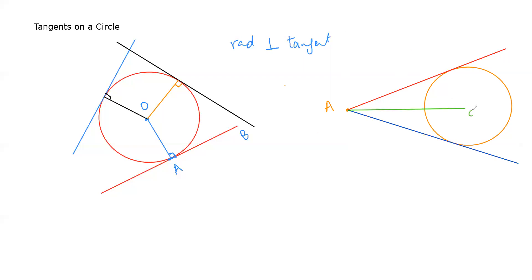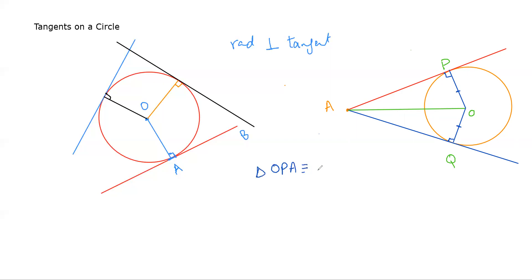Let's call the center O, the two points of tangency P and Q. I draw line OP — it looks perpendicular to AP. The same for OQ. Now, can triangle OPA be congruent to triangle OQA? We have OP equal to OQ since both are radii, OA equal to OA as the common side, and angle OPA equal to angle OQA — both are right angles.